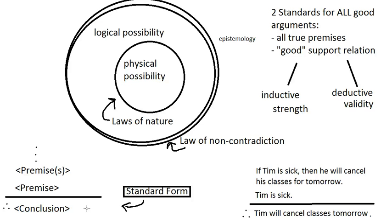Think about it the way you'd critically evaluate someone making a claim about a guarantee in some other context — like a tire company saying 'we guarantee these tires will not need to be replaced for two years.' Can they guarantee that? If you're imagining whether you believe the guarantee or not, you're imagining other possibilities — cases where the acknowledged condition happens but the promised outcome doesn't. That's the same kind of testing we do for validity.